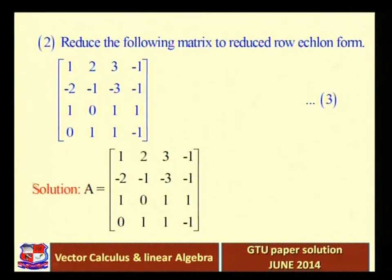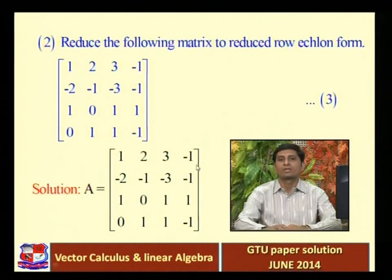We now convert the given matrix to RREF using row operations. The matrix is: Row 1: [1, 2, 3, −1], Row 2: [−2, −1, −3, −1], Row 3: [1, 0, 1, 1], Row 4: [0, 1, 1, −1].